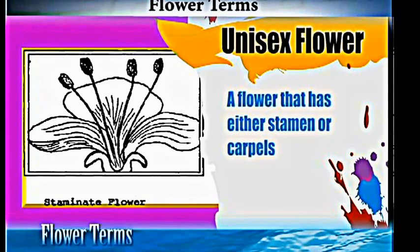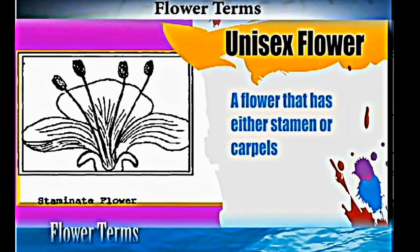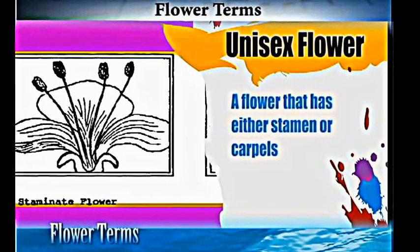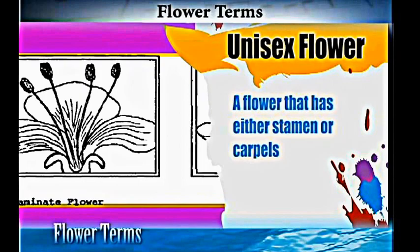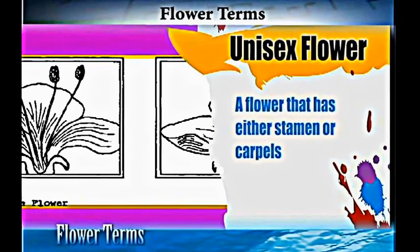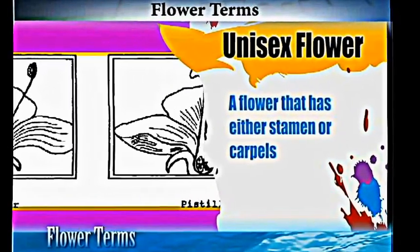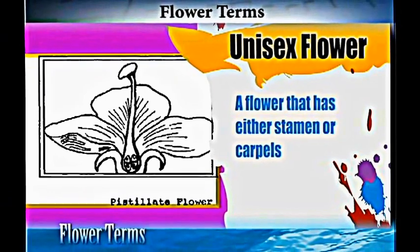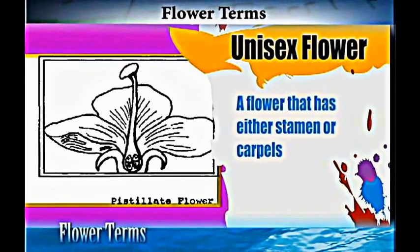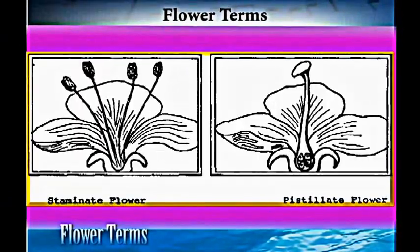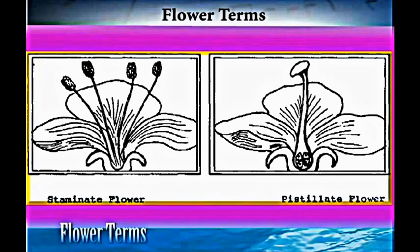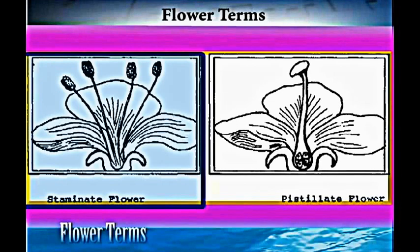A flower can also be unisex. A unisex flower is one that has either the stamens or the carpels — not both. A flower is said to be unisex if it only has stamens or it only has carpels.